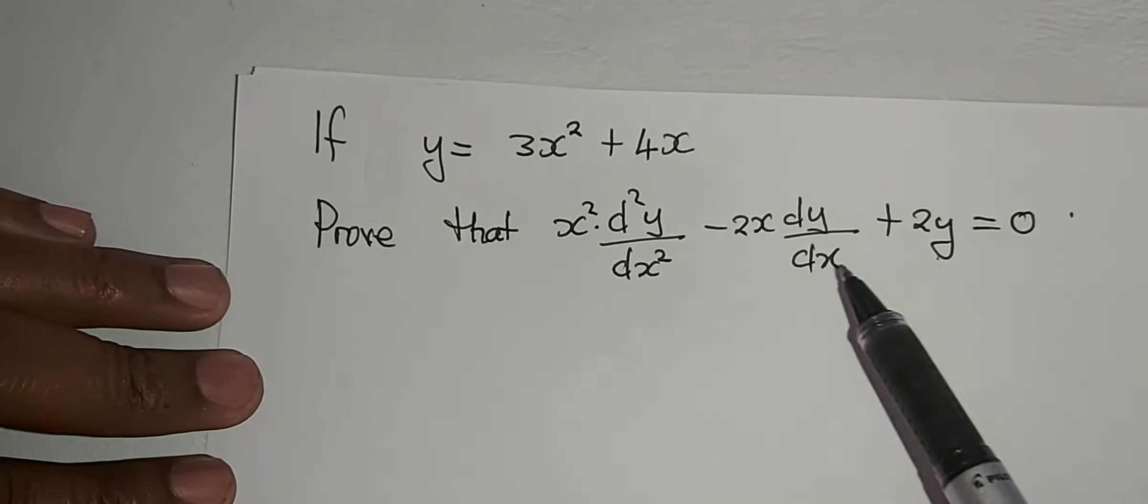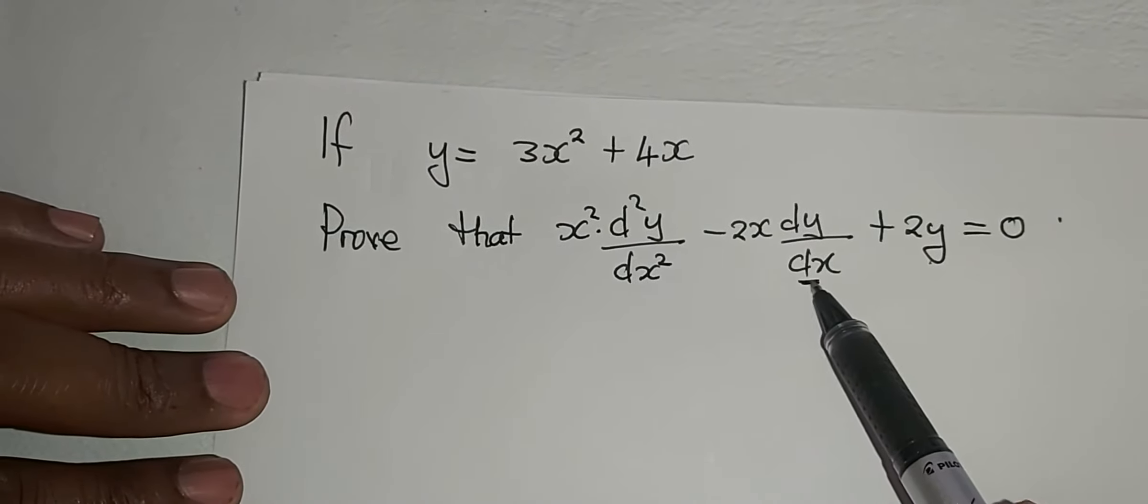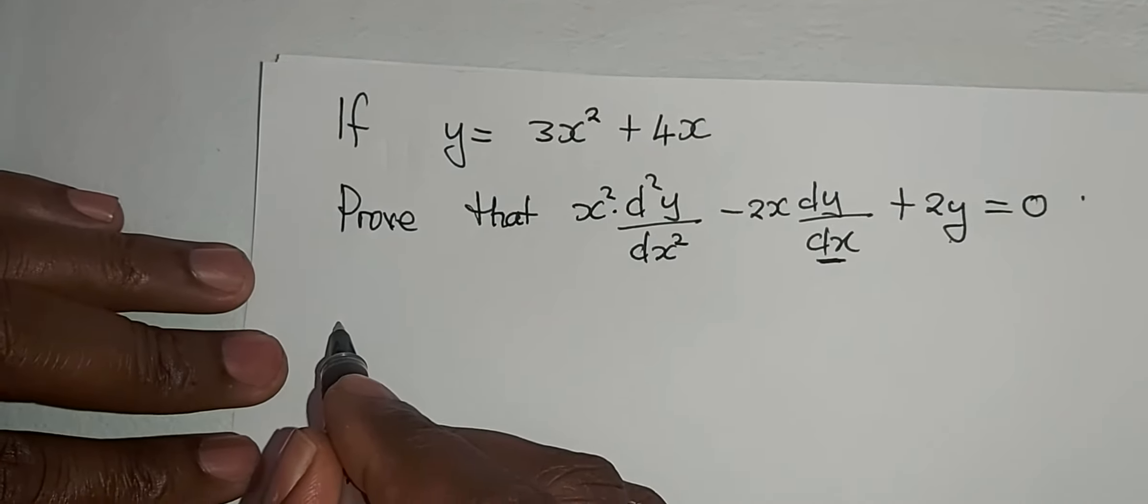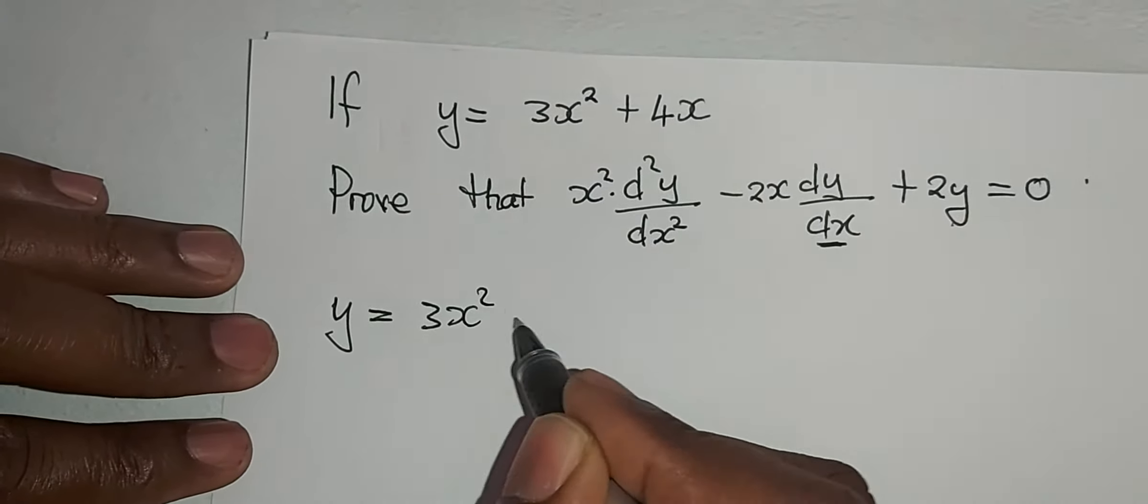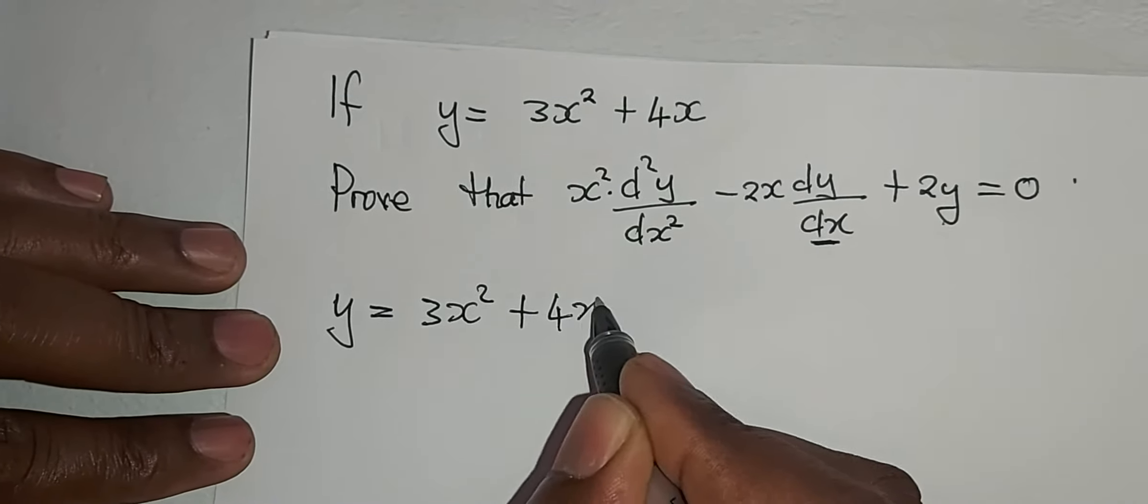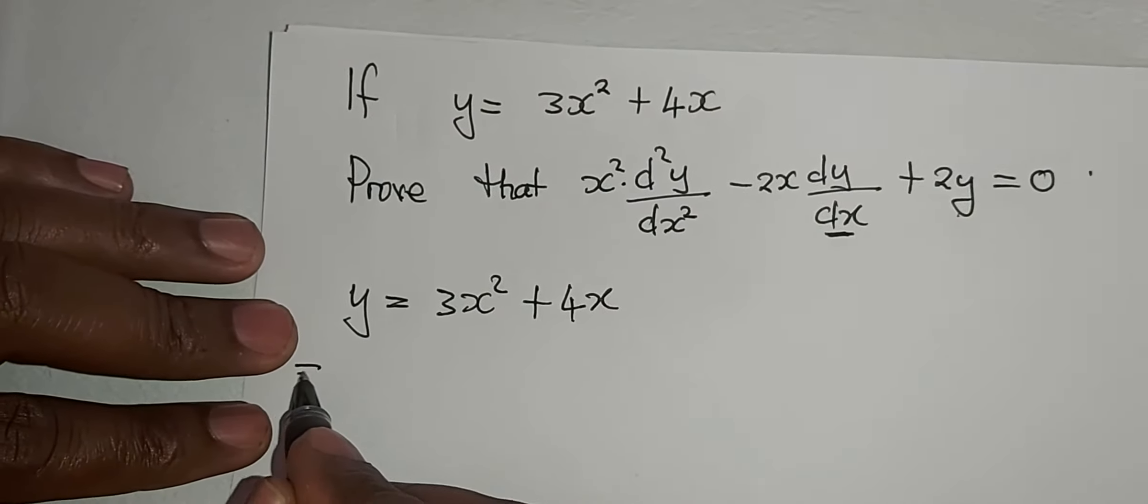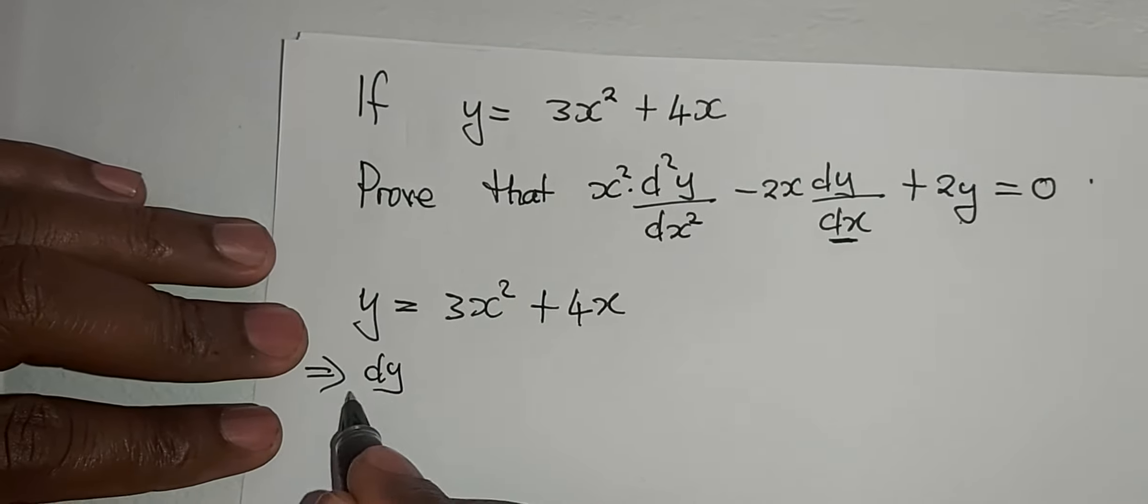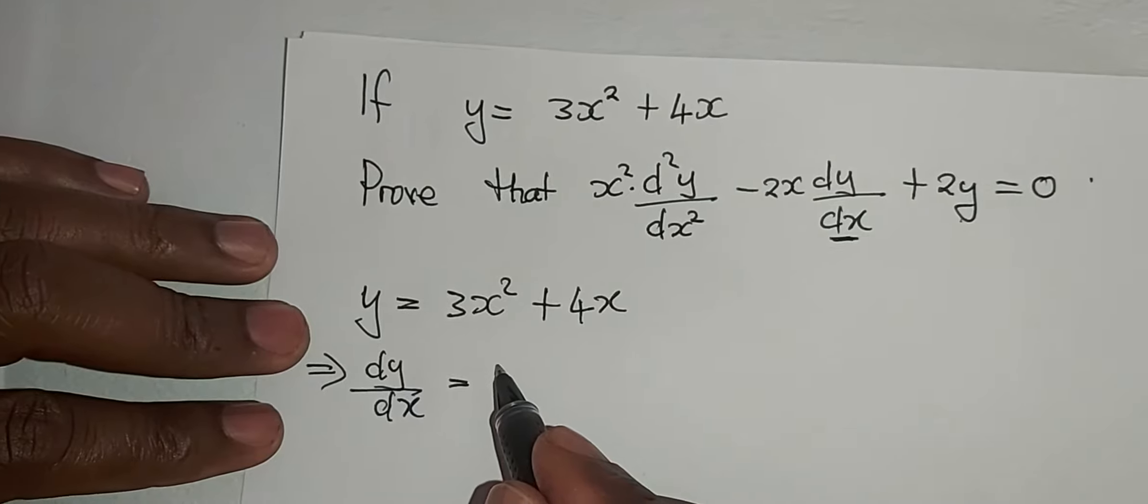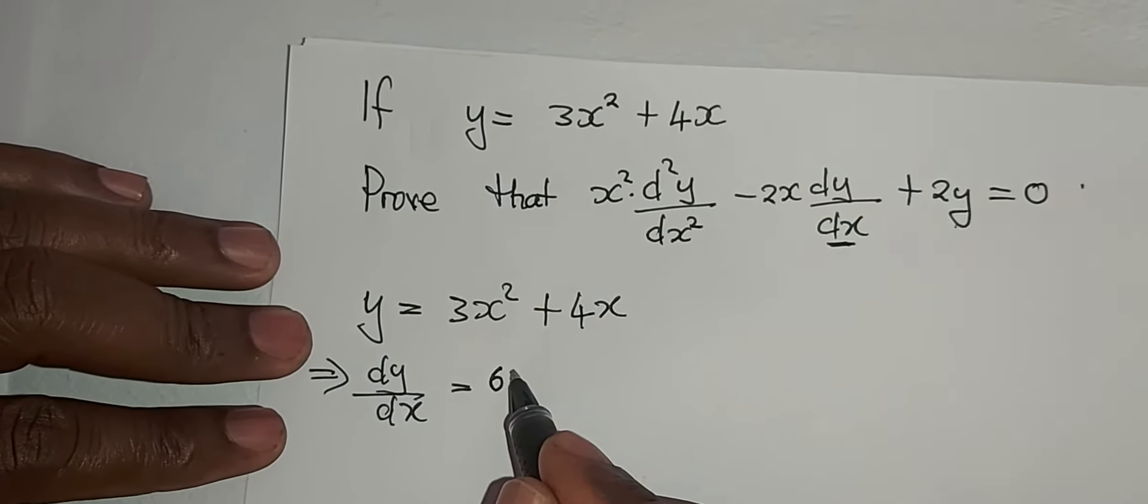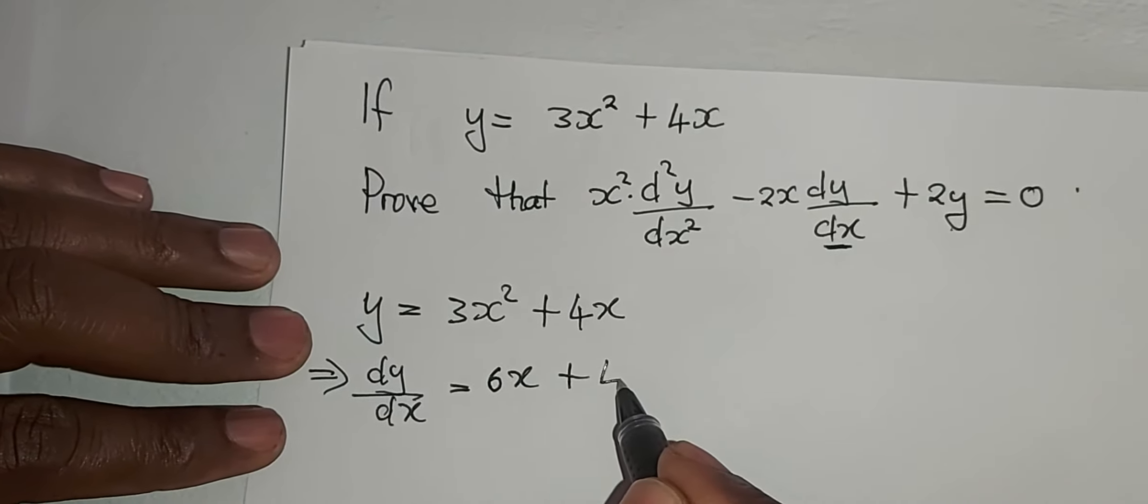First we must find dy dx. We are given y equals 3x squared plus 4x, which means that dy dx is equal to differentiating that gives me 6x plus 4.